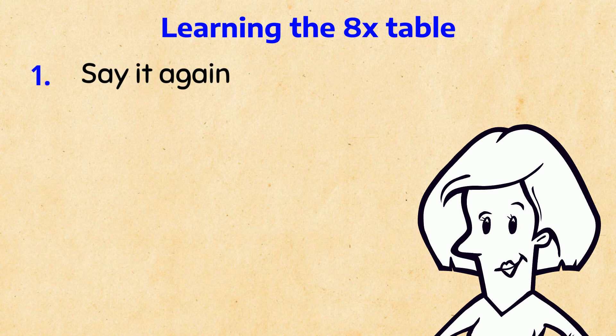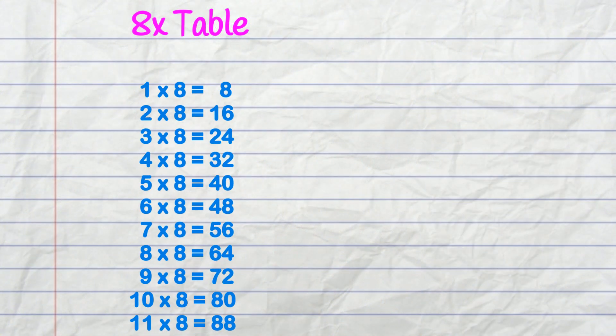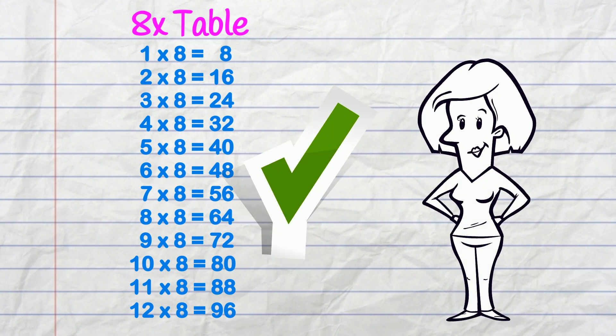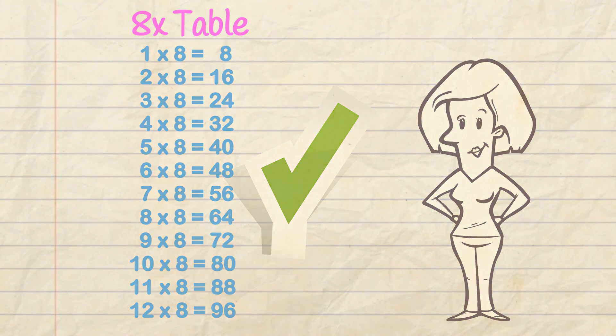Say it again! Then write it in your math book. Make sure to get it checked. Follow our method and you'll soon have the 8x table down.